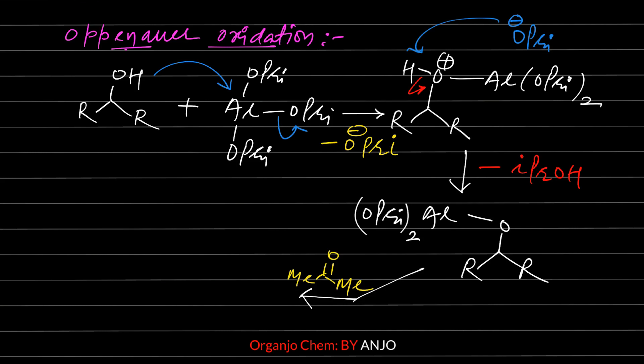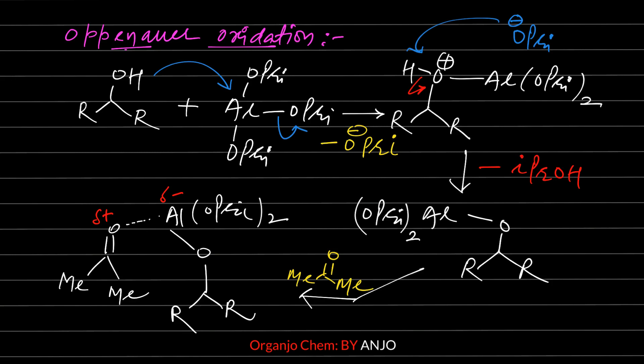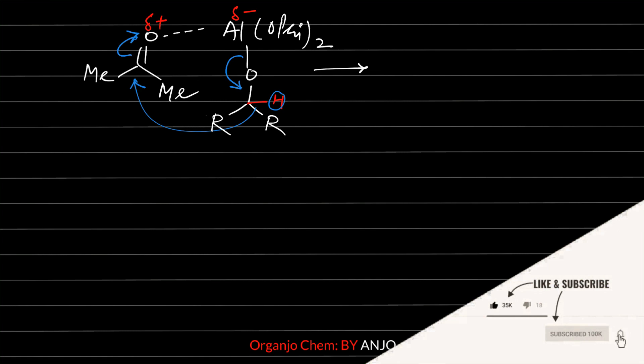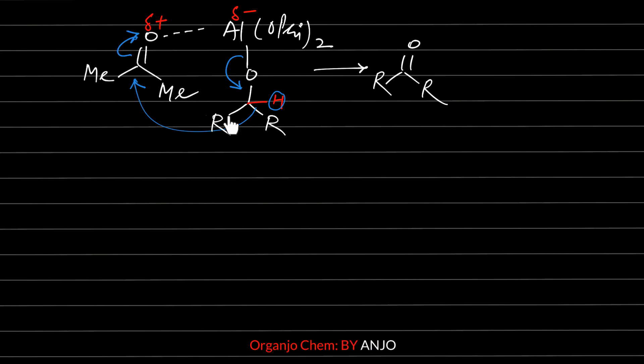In the next step, the isopropoxide molecule that left acts as a base, abstracting a hydrogen from the oxygen, breaking the oxygen-hydrogen bond and forming isopropanol, giving us an intermediate compound. In the next step, this intermediate reacts with acetone — the oxygen of acetone forms a bond with aluminum, causing a partial negative charge on aluminum and partial positive charge on oxygen. The intermediate then transfers a hydride ion through a cyclic transition state: the carbon-oxygen bond shifts, the aluminum-oxygen bond breaks and shifts, and a hydride attacks the carbon. All these steps occur simultaneously, forming the cyclic transition state, and after hydride ion transfer, the carbonyl compound is formed.